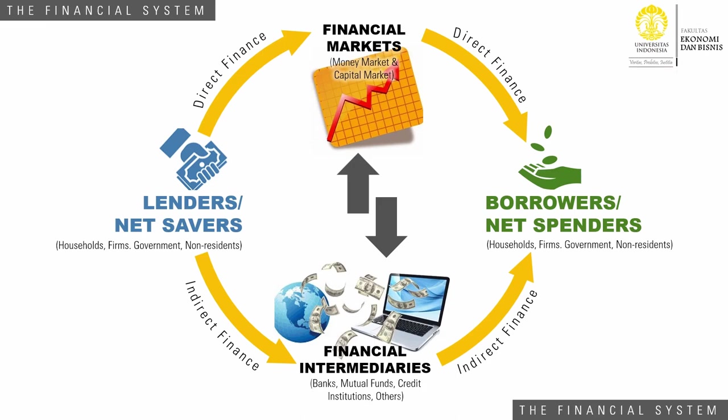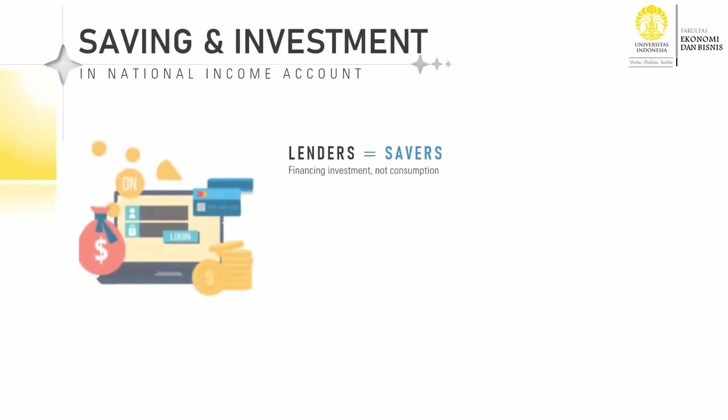To raise funds in an economy, lenders are savers because what they lend is their saving — income that they don't spend or use for consumption. Since we are in a macro perspective, saving can only finance investment, not consumption. With an aggregate or macro perspective, lending money to finance someone else's consumption is exactly like that person consuming using their own money.